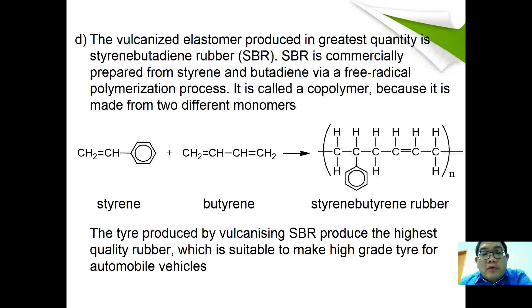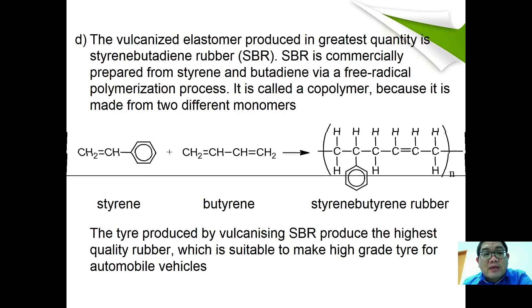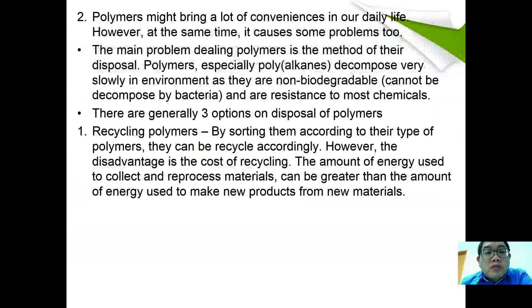The vulcanized elastomer produced in greatest quantity is styrene-butadiene rubber (SBR). SBR is commercially prepared from styrene and butadiene by free radical polymerization. It is also called a copolymer because it is made from two different monomers. Block-vulcanized SBR produces the highest quality rubber, suitable for making high-grade tires for automobile vehicles.